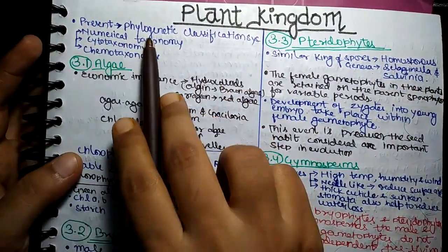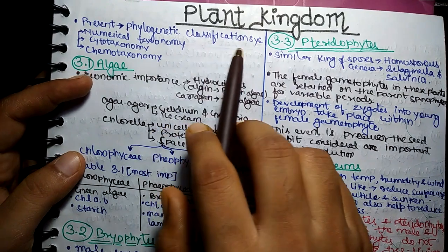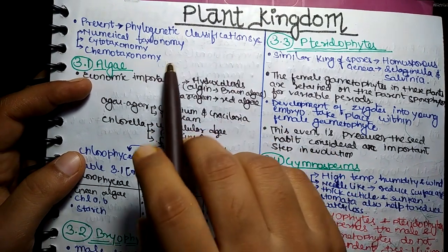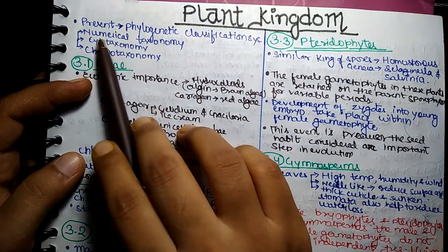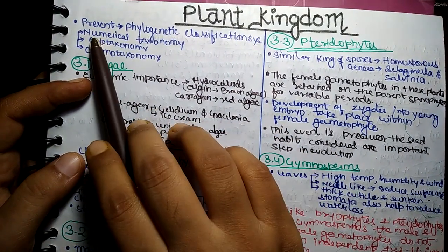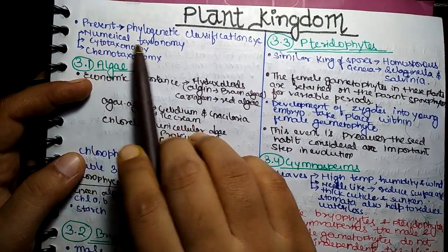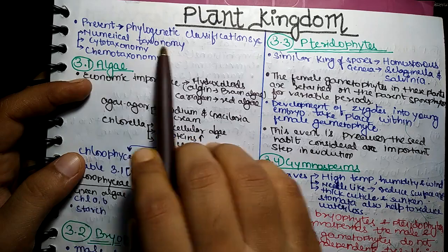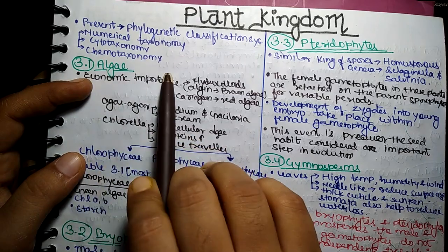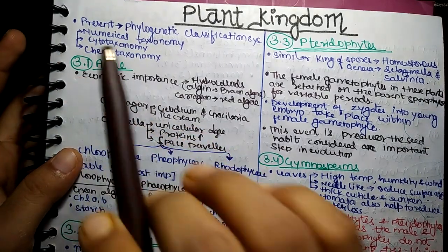In present, we use the phylogenetic classification system. Numerical taxonomy, cytotaxonomy, and chemotaxonomy — all of these are used.